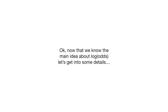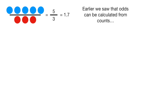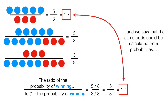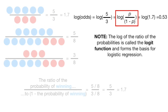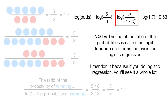Now that we know the main idea about the log of the odds, let's get into some details. Earlier, we saw that odds can be calculated from counts, and we saw that the same odds could be calculated from probabilities. And that means we can calculate the log of the odds with counts or probabilities. Either way, we'll get the same value. Note, the log of the ratio of the probabilities is called the logit function, and it forms the basis for logistic regression. I mention it because if you do logistic regression, you'll see it a whole lot.